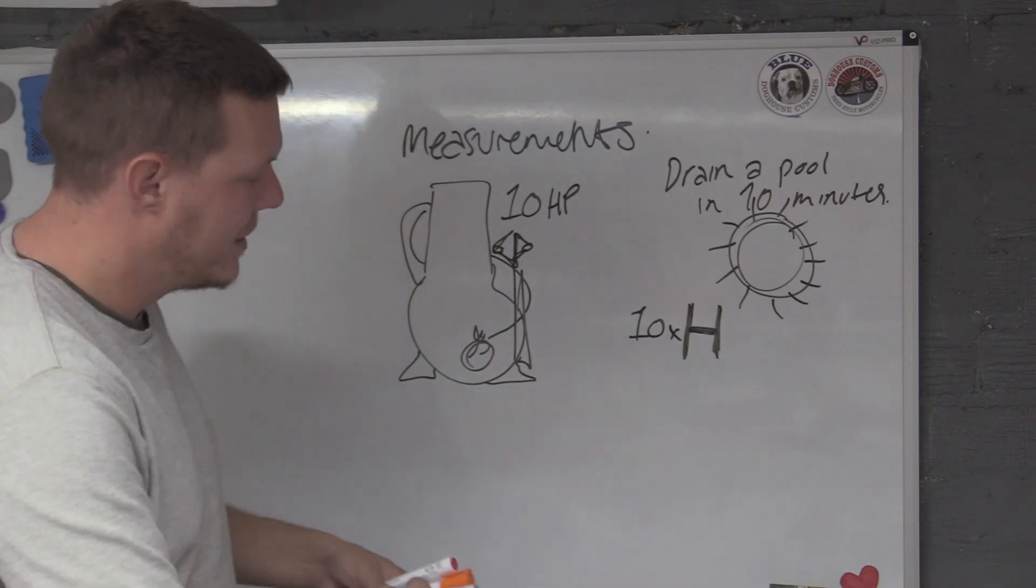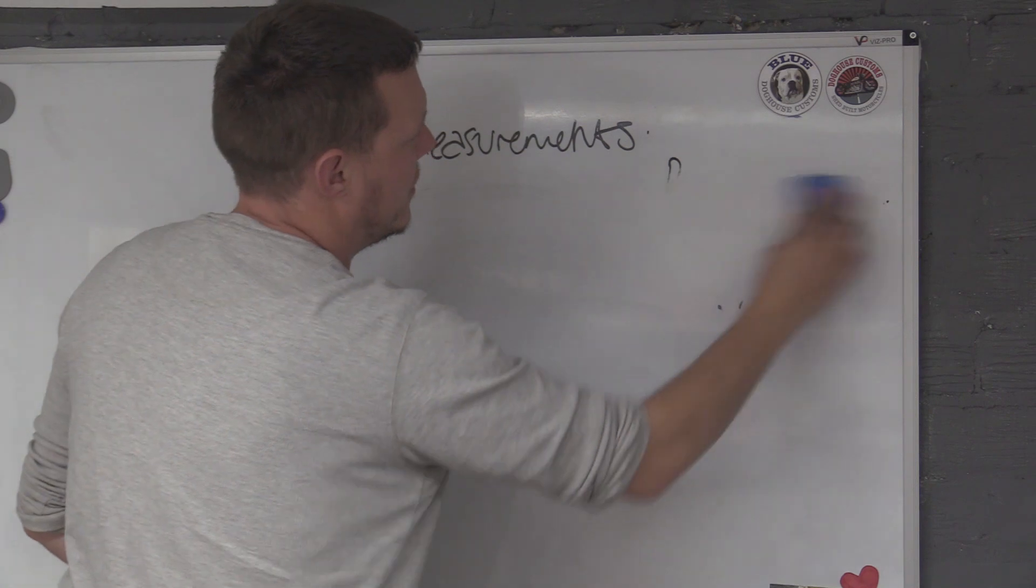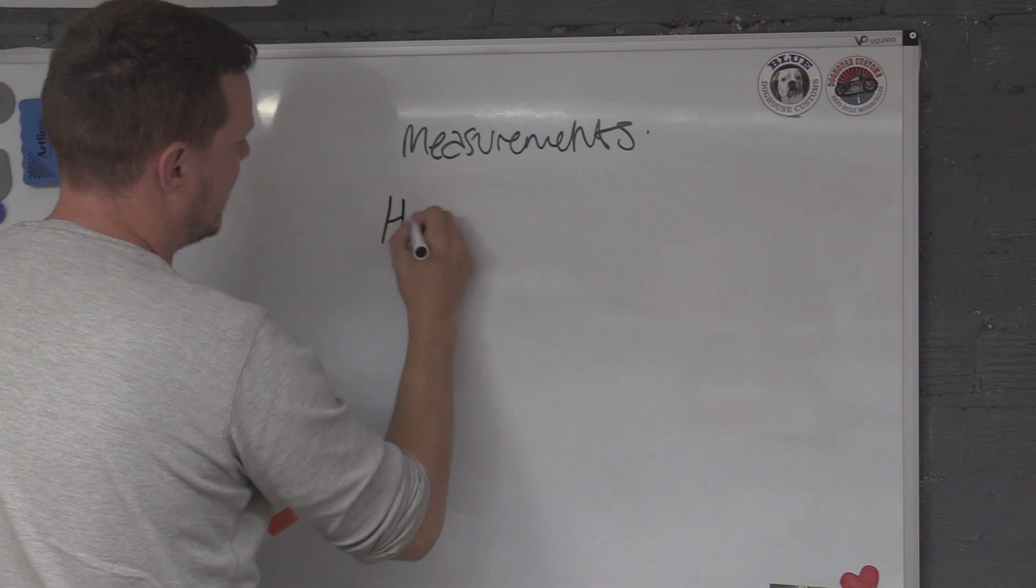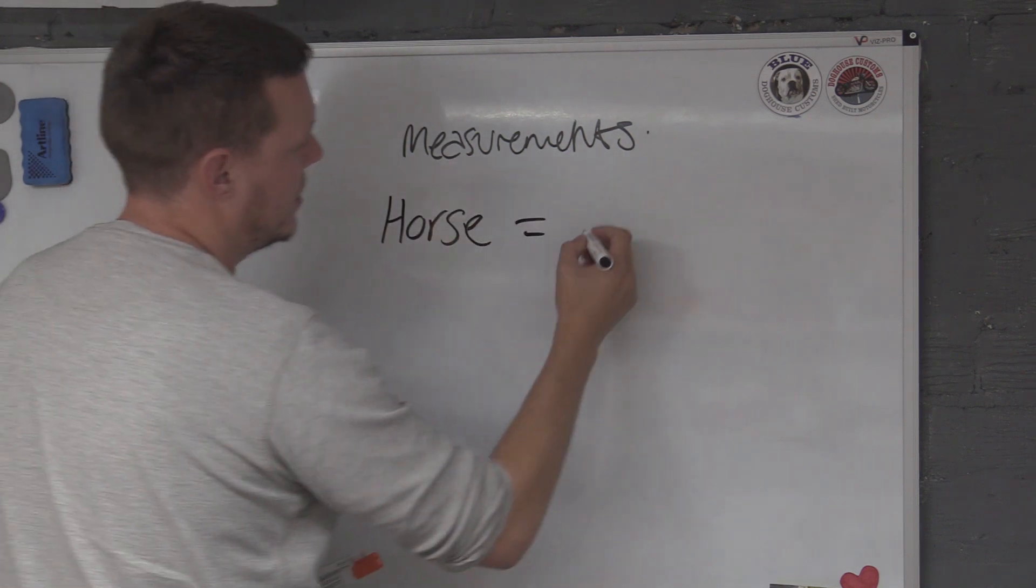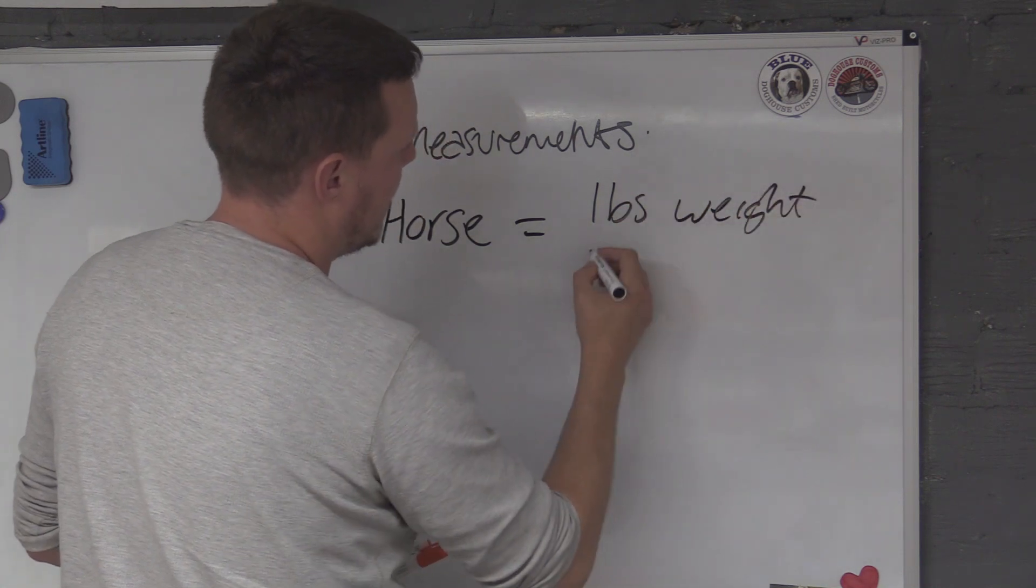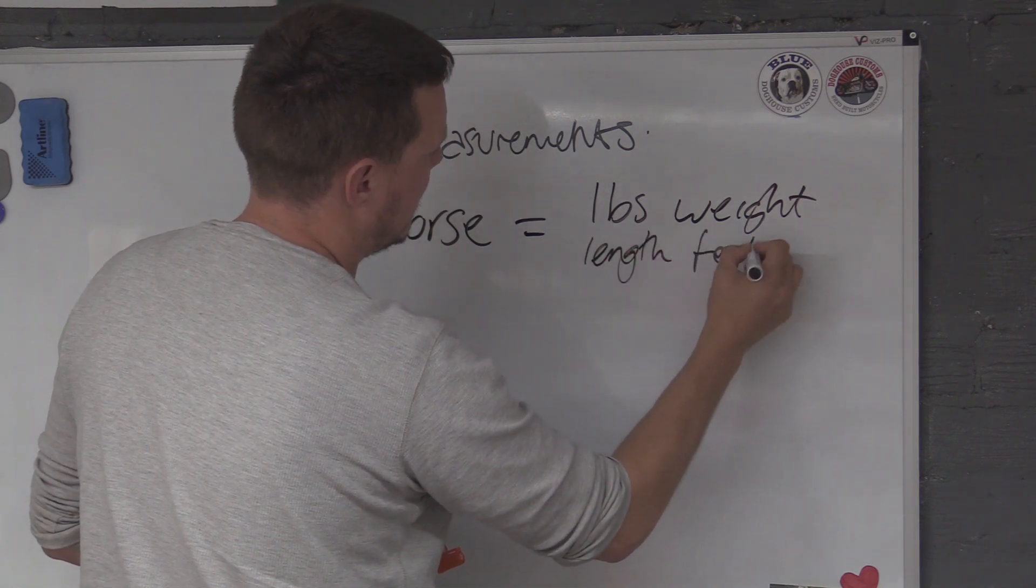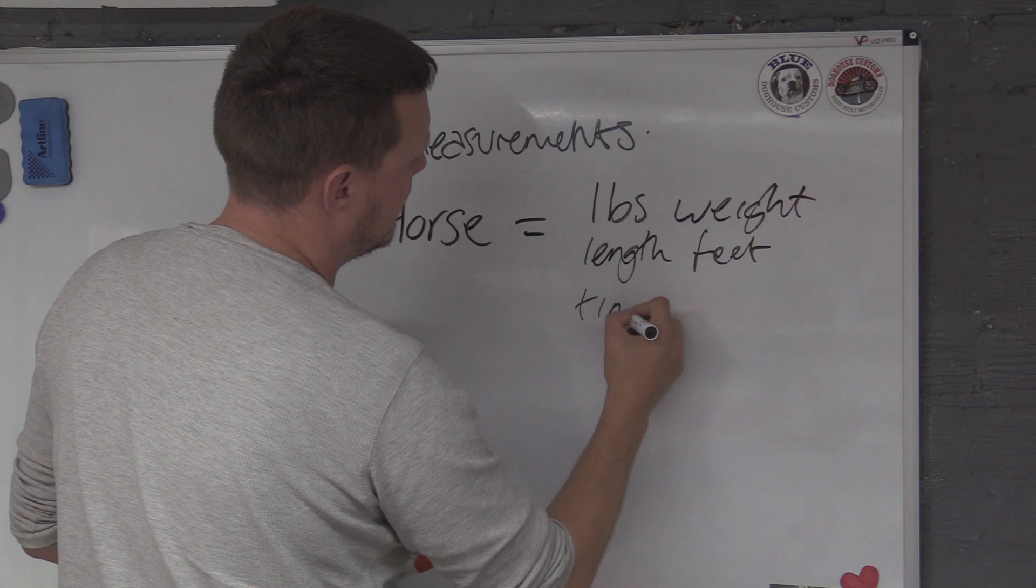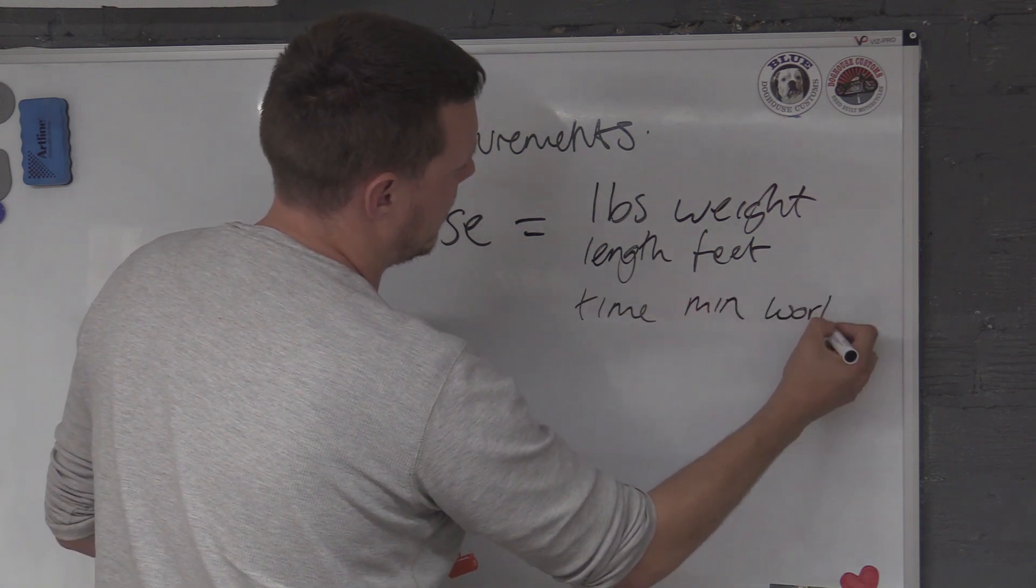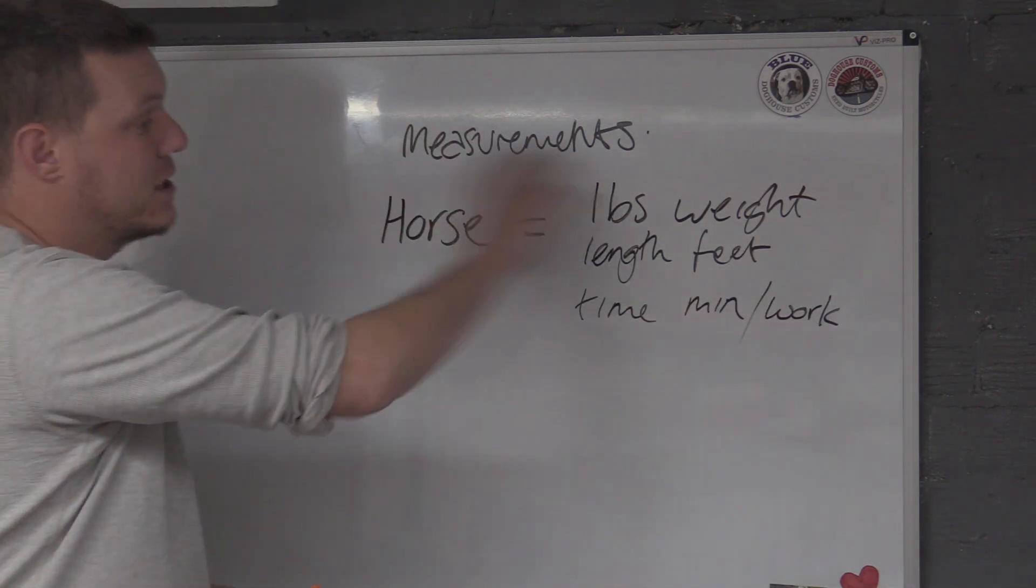He's taken a horse and he's said, horse equals pounds of weight and length in feet and then time in minutes or work. You know, basically all this in work. That's what it is. It's not divide, but you get what I mean.